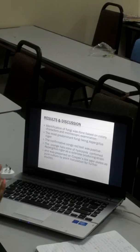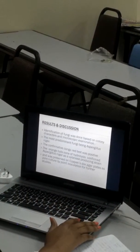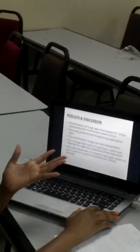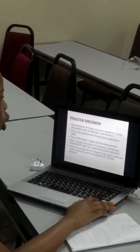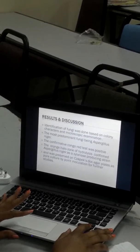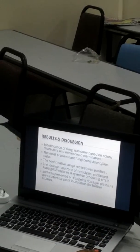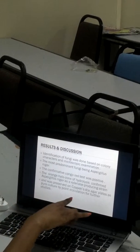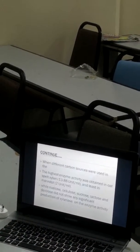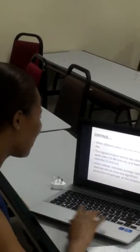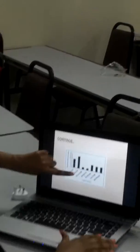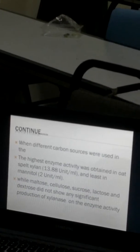The fungi will be identified using microscopic examination, based on colony characters. We'll be performing our molecular weight test using a Congo red test, which will show a positive result to confirm that our enzyme is present. It will then be plated on an agar plate as a pure culture, using an inoculation method. This table shows that our xylanase has high enzyme activity compared to other common carbon sources. Maltose comes close to xylan, but the rest — maltose, cellulose, sucrose, and dextrose — do not show any significant enzyme activity in the production of xylanase.